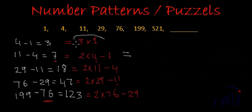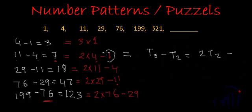If we see carefully, the third term minus the second term, t3 minus t2, is giving us 2 times t2 minus t1. Similarly, this is the fourth term, so t4 minus t3 is 2 times t3 minus t2.